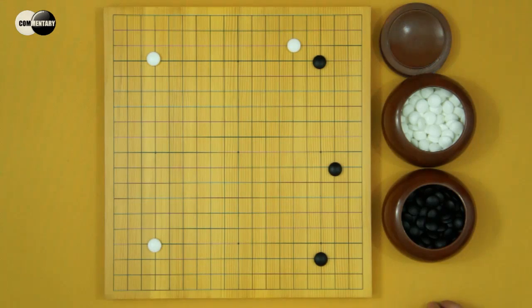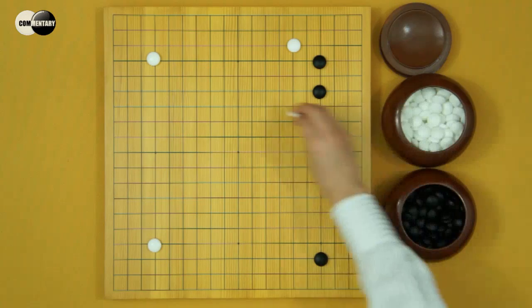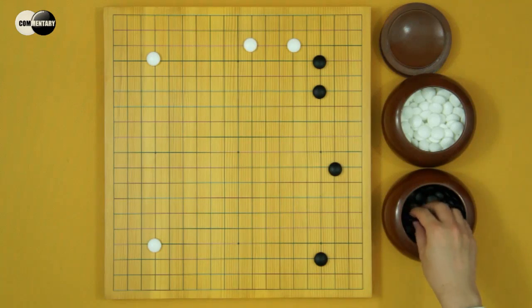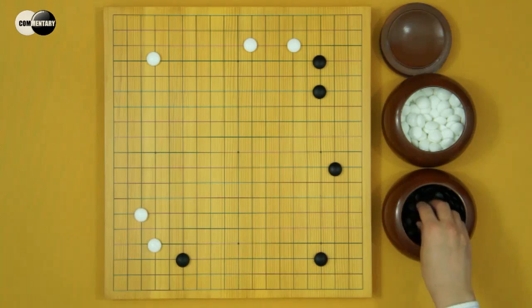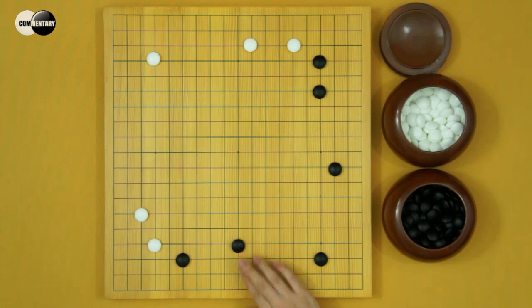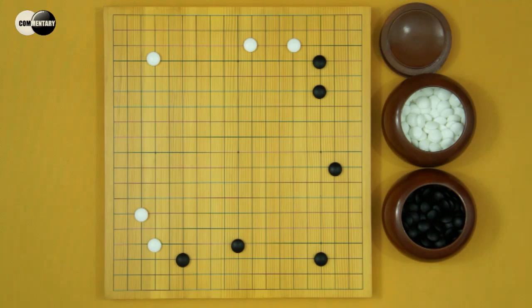If White kakari, Black can simply jump. White extends. Black kakari. White keima. Black extends. This result seems normal. But actually, it's good for Black.